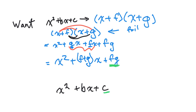This part here matches this part. So when we have our original equation x plus f and x plus g, the f and g must multiply to equal the c value. But also, the middle term — f plus g — must equal the b value in our problem. So if I know c is the product of two numbers, and I can find two numbers that add to the middle number b, then we've got a solution.